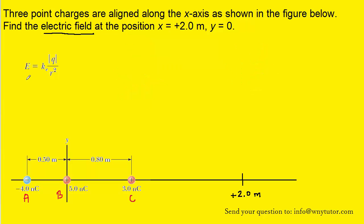What we will need to do in order to calculate the complete electric field at this position marked here is to use the electric field equation three times — once for charge A, another time for charge B, and a third time for charge C. We can begin with charge A.